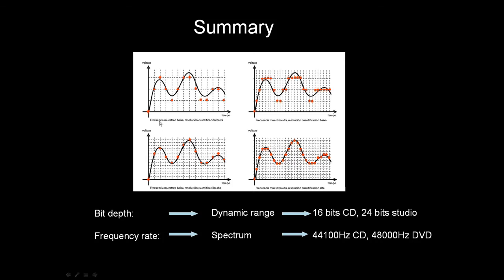Finally, when digitalizing sound, we have to take care of two factors: the bit depth and the frequency rate. The bit depth leads to the dynamic range, and there are two standards: CD with 16 bits, and studio with 24 bits. On the other side, we have frequency rate, which leads to the spectrum of the signal. There are two standards: CD with 44,100 Hz, and DVD with 48,000 Hz.